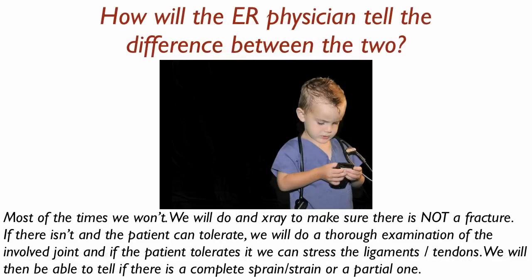How will the ER physician tell the difference between a sprain and strain, or between the different grades? Most of the time we don't definitively. We will do an x-ray to make sure there is no fracture. If there isn't a fracture and the patient can tolerate it, we will do a thorough examination on the involved joint, stressing the ligaments and tendons to find out if there are functional deficits or instability, and determine if there is a complete or partial sprain or strain.